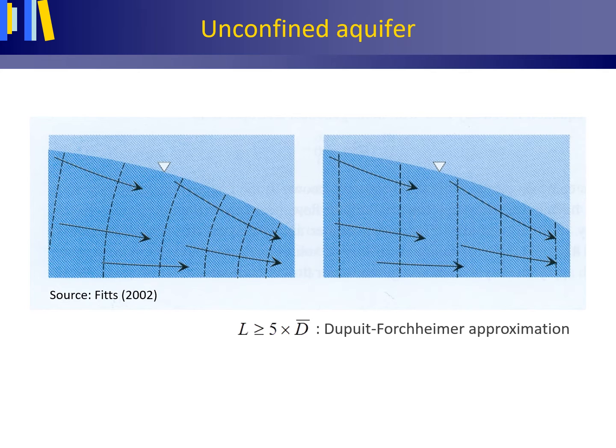This approximation is named after French civil engineer Arsène Dupuit and Austrian engineer Philipp Forchheimer. Following their approximation, and by assuming the hydraulic gradient to be equal to the slope of the water table, plus for small water table gradients streamlines to be horizontal,